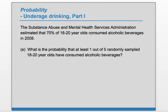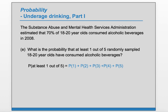Part E: What is the probability that at least 1 out of 5 randomly sampled 18-20 year olds have consumed alcoholic beverages? It's not asking exactly 1 — it's asking at least 1. At least 1 out of 5 means 1 or 2 or 3 or 4 or 5. We could apply the binomial formula 5 times and add it up, or we could use complements, which makes the problem much easier to solve.